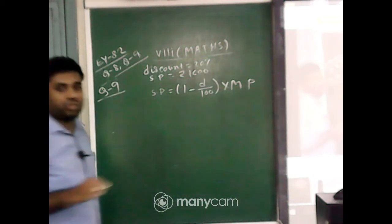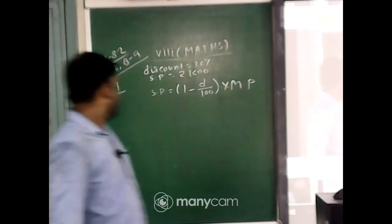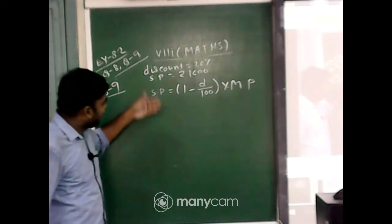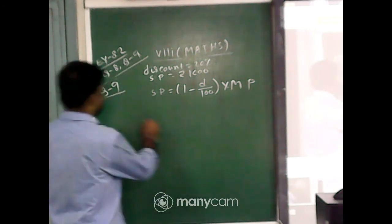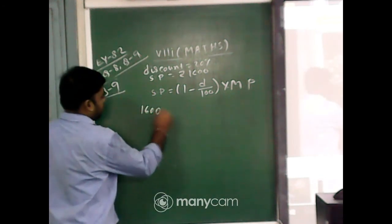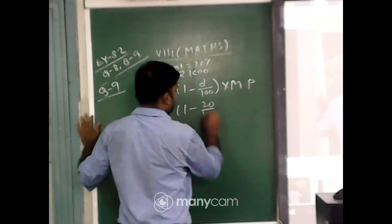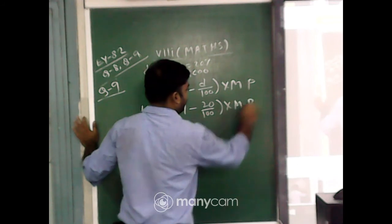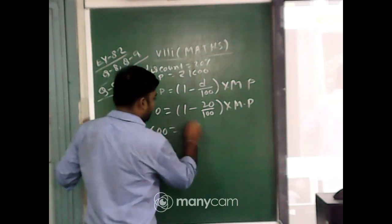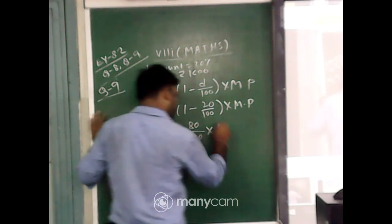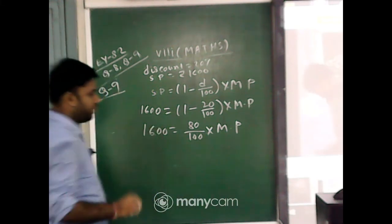Now what will be the mark price? What is the price that has been written on that product? So just use that formula: SP equals (1 minus discount by 100) into MP. So SP, that is 1,600, equals (1 minus 20 by 100) into MP, that is 80 by 100 into MP.